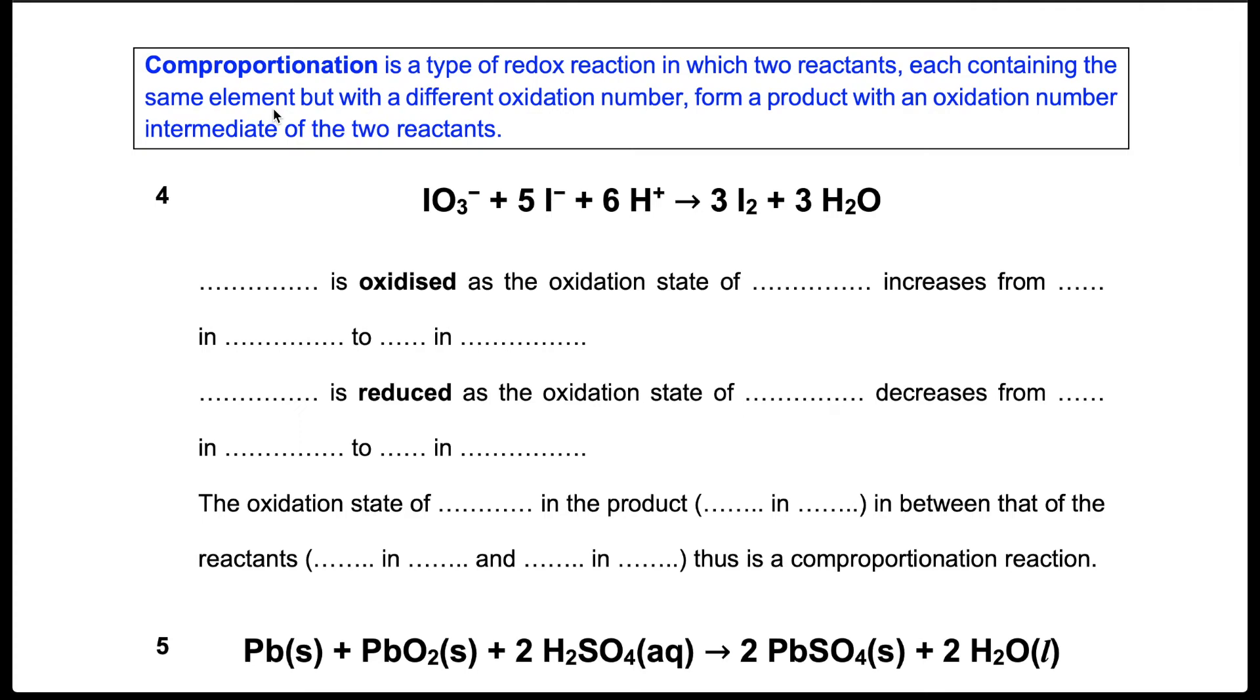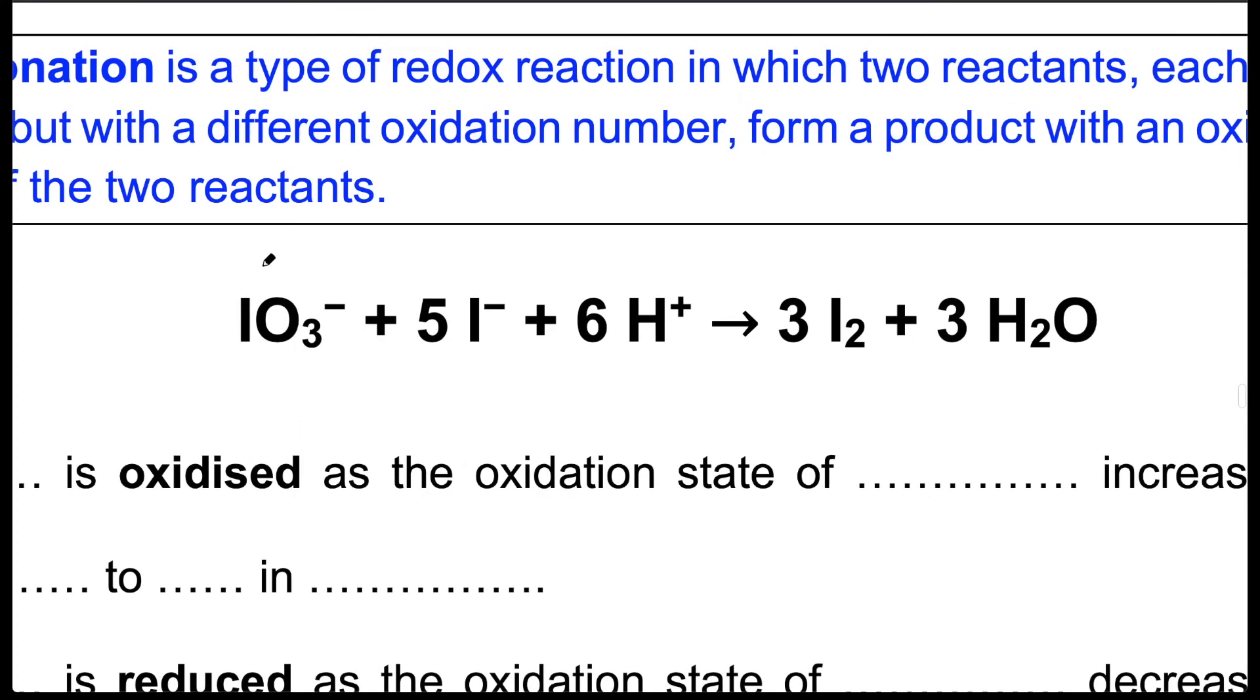Again, we start by assigning oxidation numbers to all the elements. For iodate, this is plus 5, iodide ion minus 1, and iodine 0. I left out oxygen and hydrogen because the oxidation states do not change in this reaction. So going from plus 5 to 0, the oxidation state of iodine decreases. This is a reduction reaction.